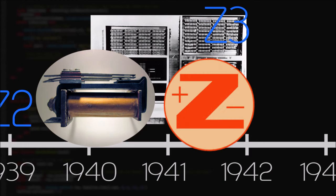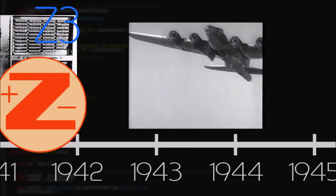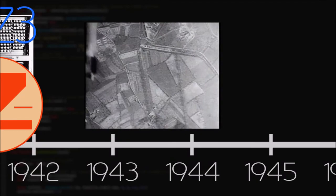Meanwhile, Zuse was dealing with the challenges presented by World War II. He was called to serve in the army in 1939. The Z1 through 3 were destroyed in air raids and Zuse was forced to flee Berlin in 1945 with the nearly complete Z4.